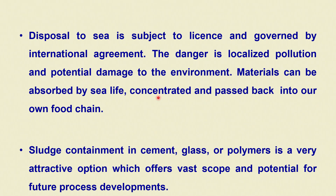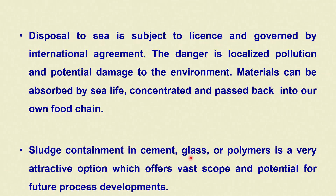Materials can be absorbed by sea life, concentrated, and passed back into the food chain — a serious concern especially with electrochemical waste discharged in the sea. Sometimes sludge containment in cement, glass, or polymers has been tried, which seems a very attractive option offering vast scope and potential for future processing, particularly in areas where there is no possibility of leaching.